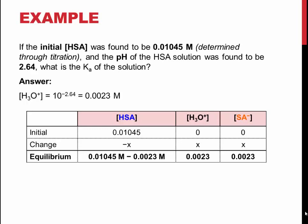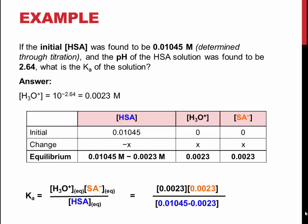The equilibrium concentration of HSA is found by subtracting 0.0023 from 0.01045. These values can then be directly inputted into the Ka expression as shown on the slide. And the Ka can be calculated as shown.